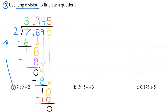I bring down the 8. 2 goes into 18 nine times, so I put the 9 above the 8 in the tenths place. 9 times 2 is 18, and the difference is 0. I bring down the 9 from the hundredths place. 2 goes into 9 four times. 4 times 2 is 8, and the difference is 1. I bring down a 0 in the thousandths place. 2 goes into 10 five times. 5 times 2 is 10, and the difference is 0.